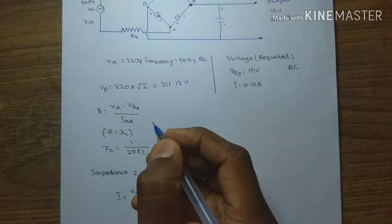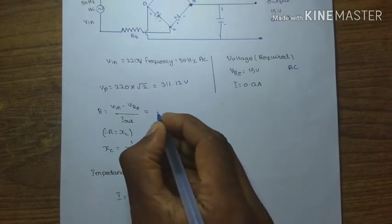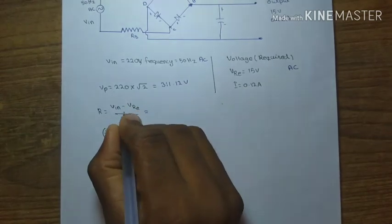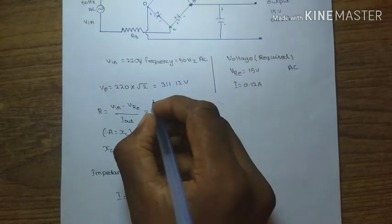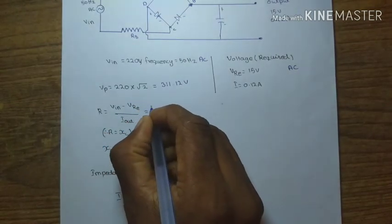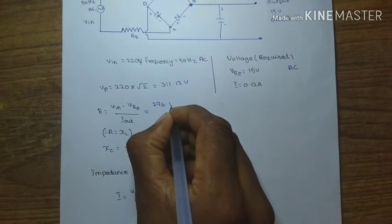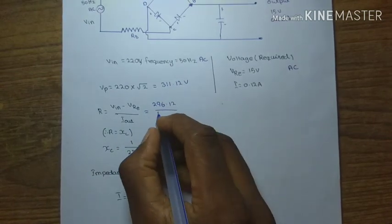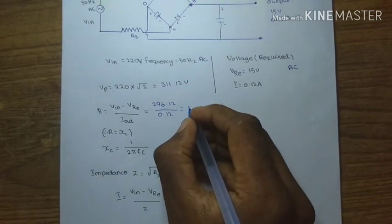To calculate the capacitance value we need resistance. R is equal to V input minus V required divided by current out. V input minus V required is equal to 296.12 divided by current 0.12 amps.